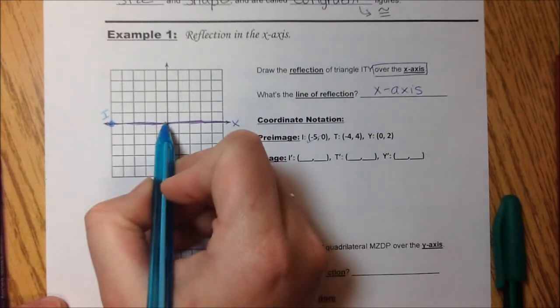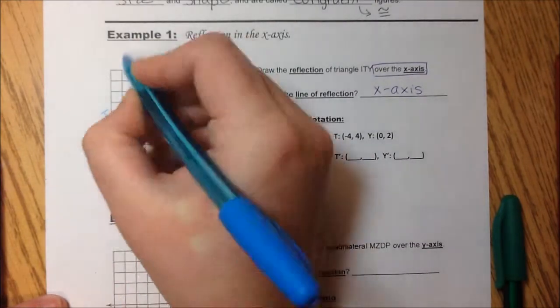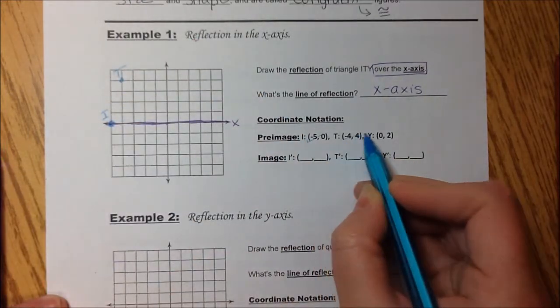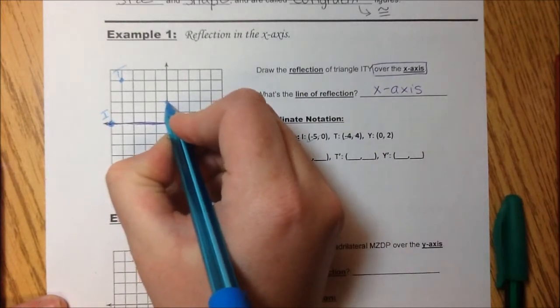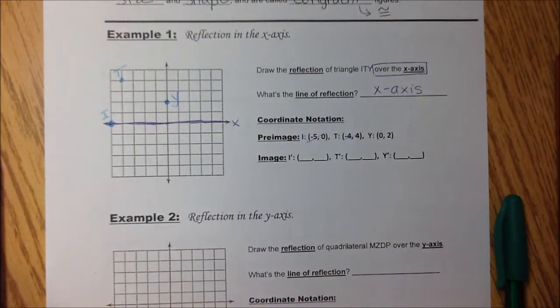T, negative 4, 4. 1, 2, 3, 4. 1, 2, 3, 4. And Y, 0, 2. That's our Y. And get your straight edge and connect those.